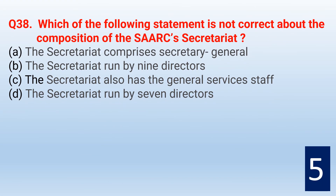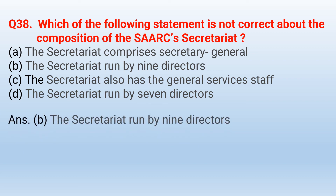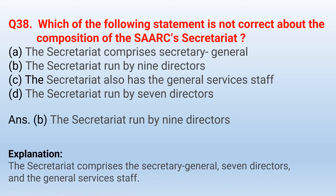Which of the following statements is not correct about the composition of the SAARC Secretariat? The Secretariat comprises the Secretary General — this is correct. The Secretariat is run by nine directors — this is not correct. The Secretariat also has the General Services staff — this is correct. The correct option is option B. The Secretariat comprises the Secretary General, seven directors, and the General Services staff.